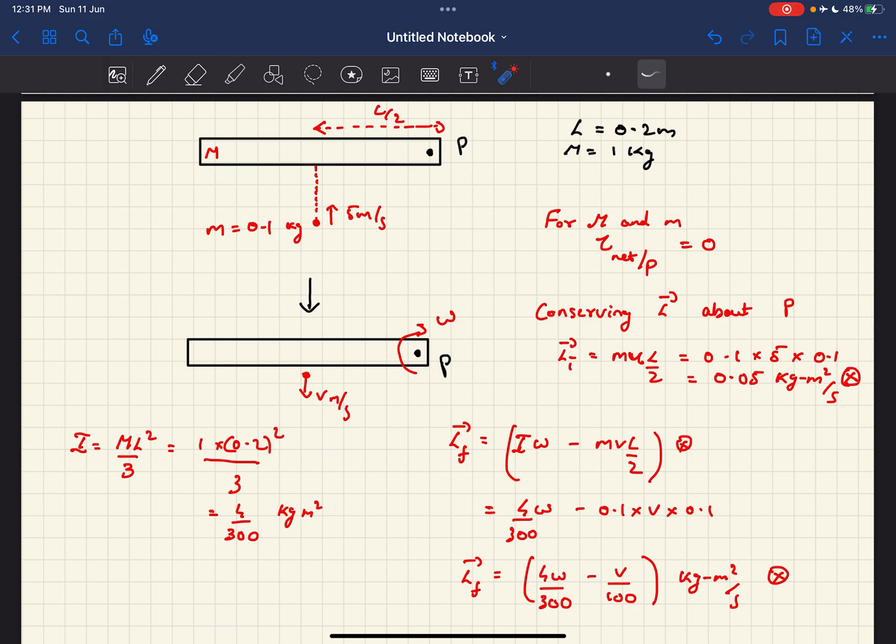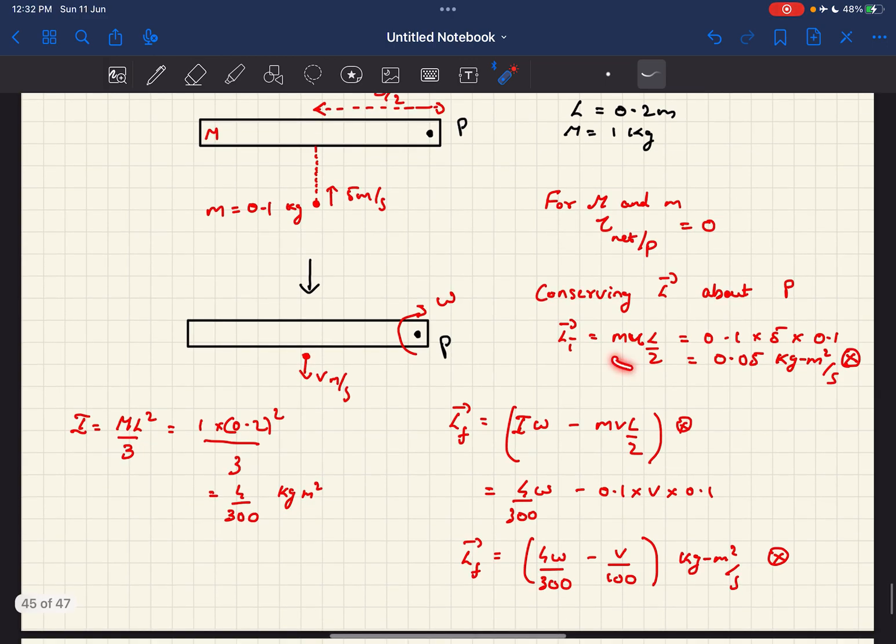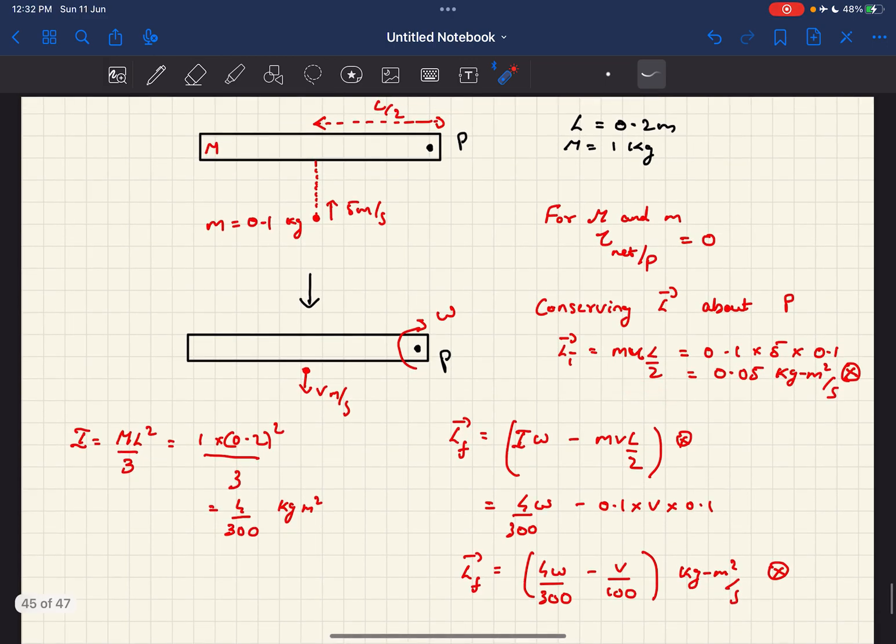So if we have to find the initial angular momentum of the system, it would be only contributed because of the smaller mass as the bigger rod is at rest. That would be simply m u l by 2, where u is this 5 meter per second.